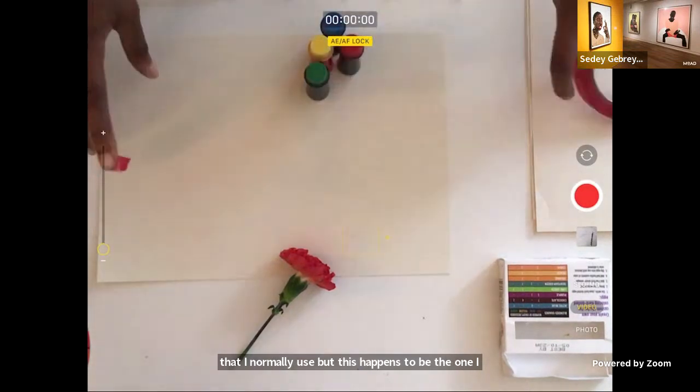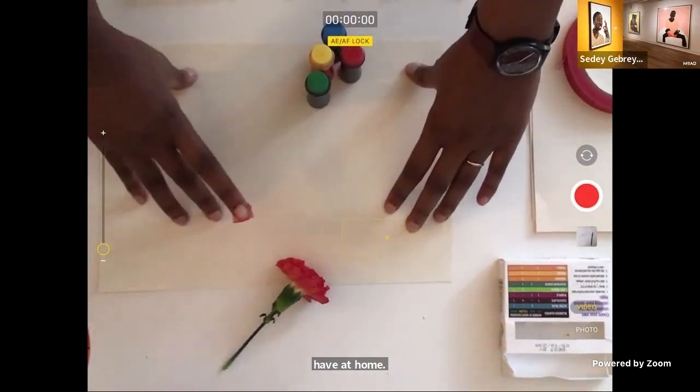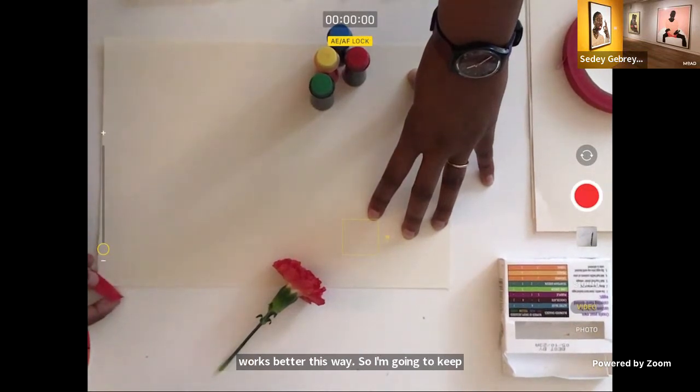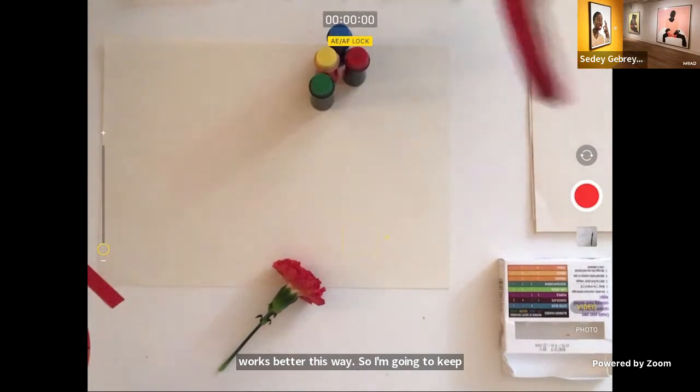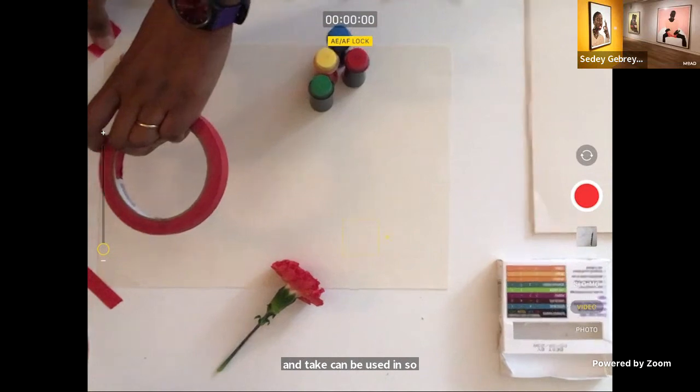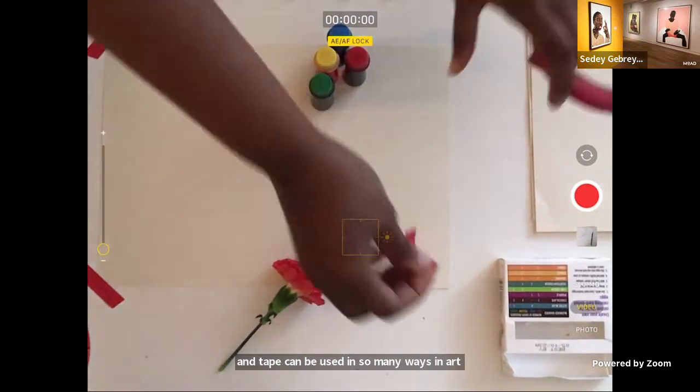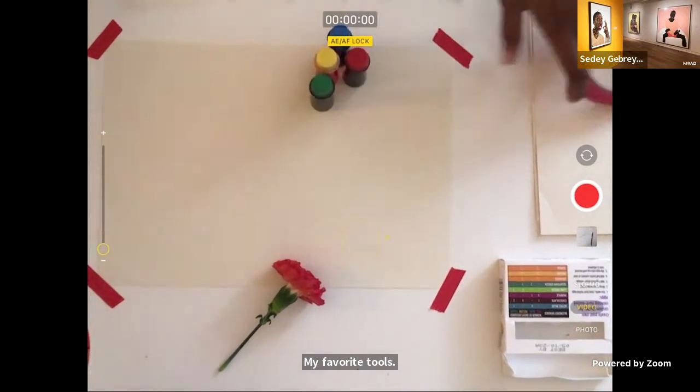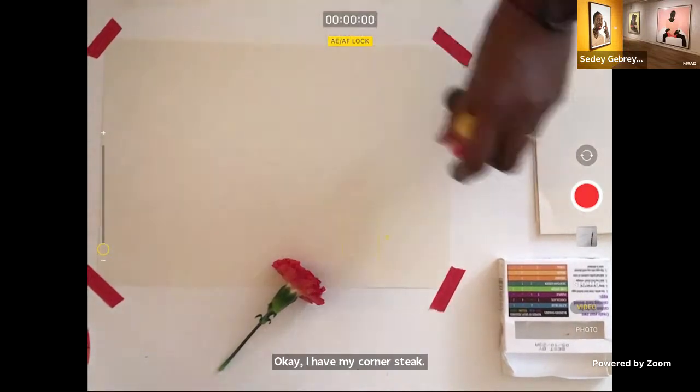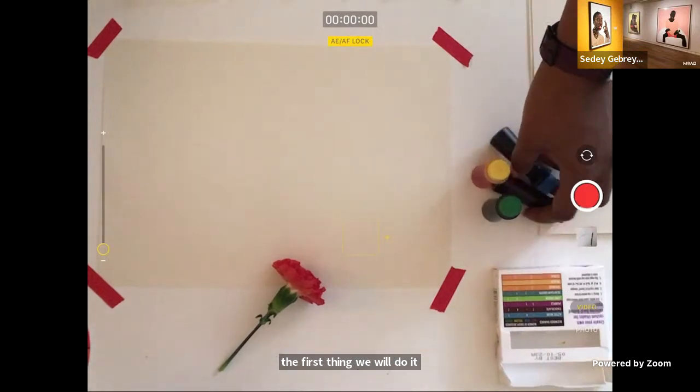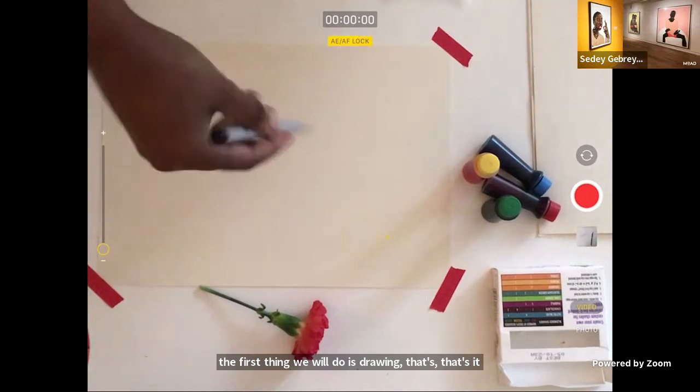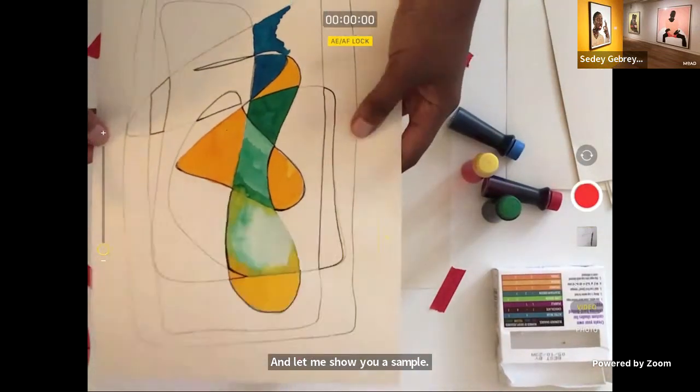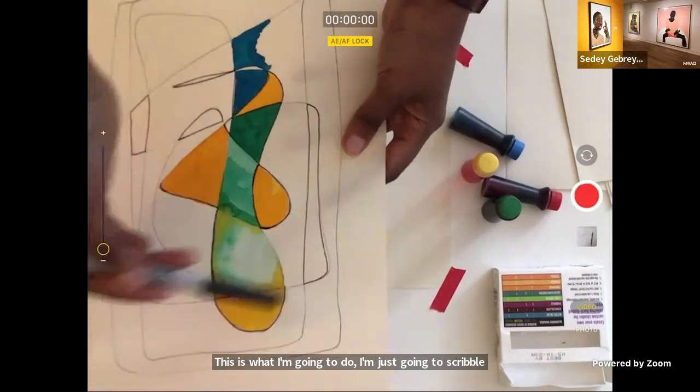So you can have your paper set horizontally or vertically. I have it this way because the camera also works better this way. So I'm going to tape the corners and tape can be used in so many ways in art. My favorite tools. Okay. I have my corners taped. And the first thing we will do is free drawing. I'm just going to scribble. And let me show you a sample. This is what I'm going to do. I'm just going to scribble, just like this, creating tangled and intertwined lines.